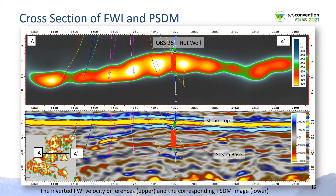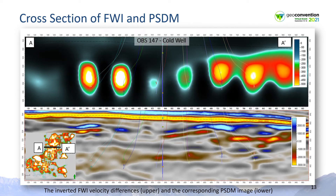In this east-west cross section, we show how the temperature logs in the vertical observation wells provide another set of control data. The horizontal well sticks are shown here projected onto the cross section. The velocity difference color legend was adjusted to correspond with steam temperature in the observation wells. In this example, we show good agreement where the observation well indicates no heating is occurring in the reservoir. You can also see the horizontal well pairs projected onto the cross section, and there is good agreement between the injector, which is the upper well stick, and the interpreted FWI steam chamber.